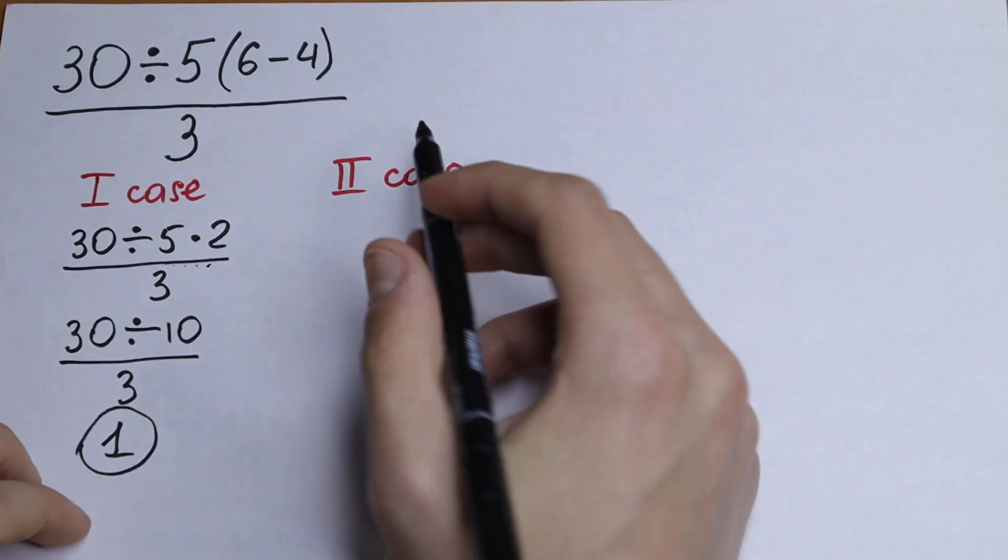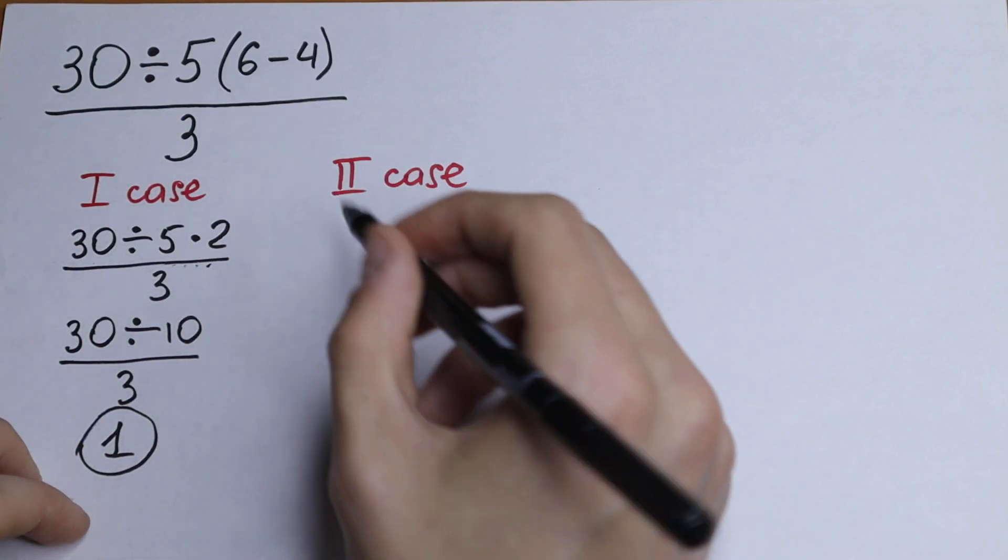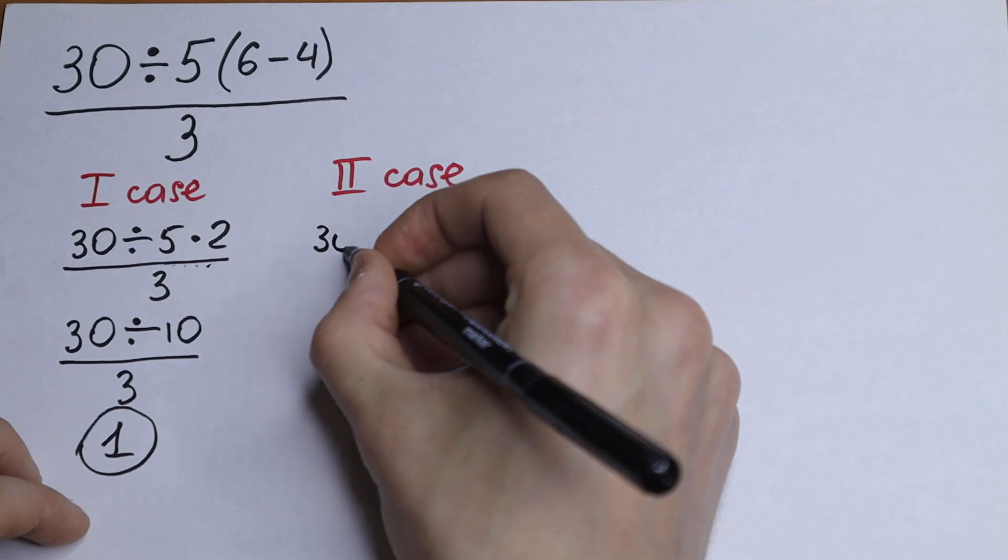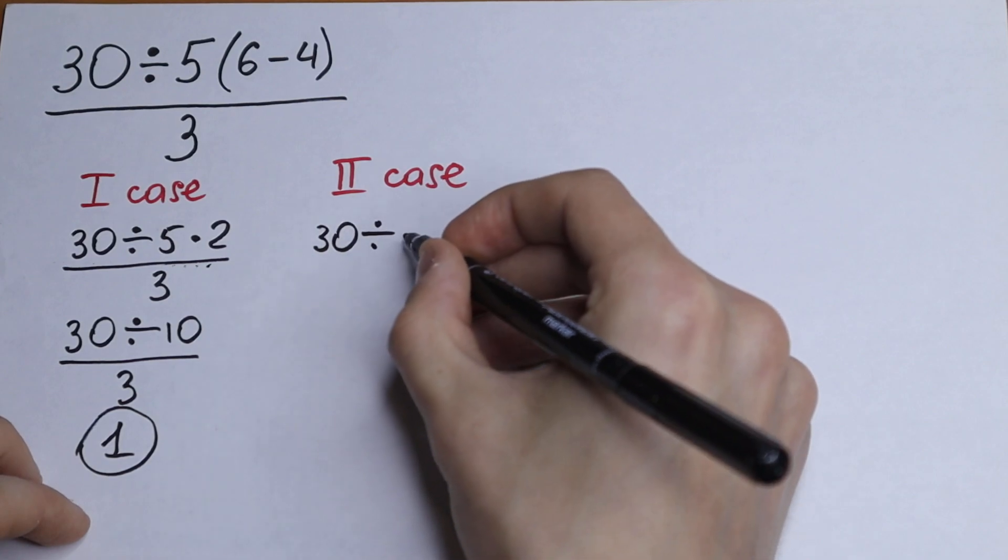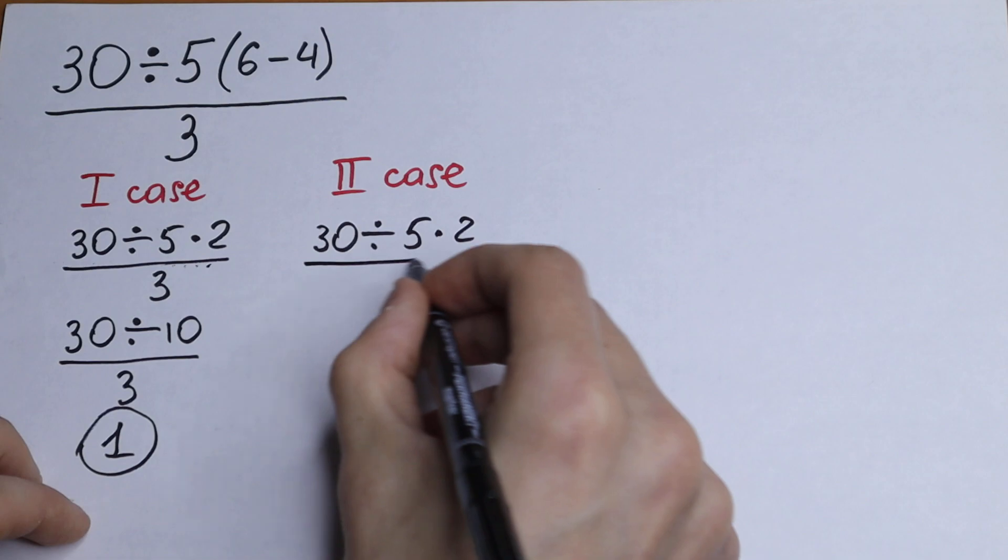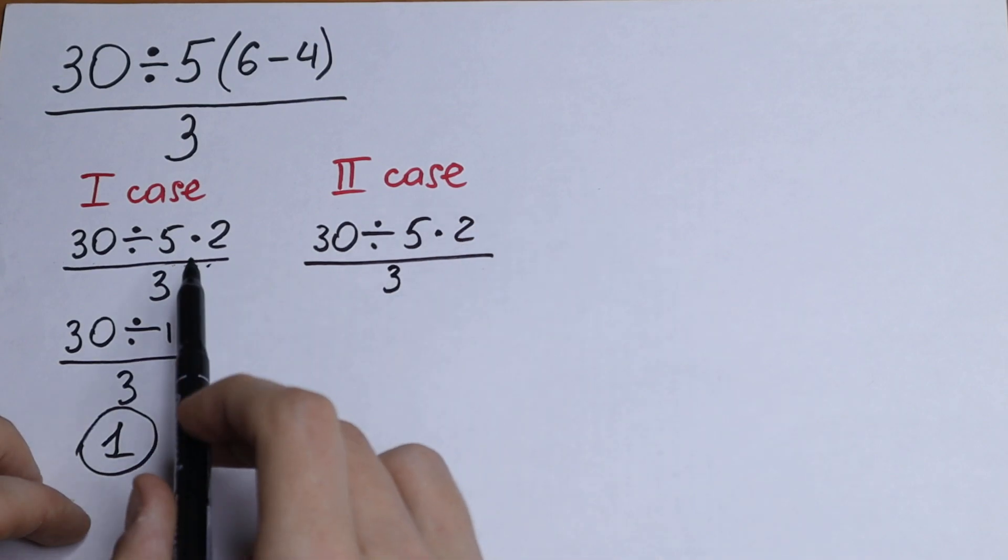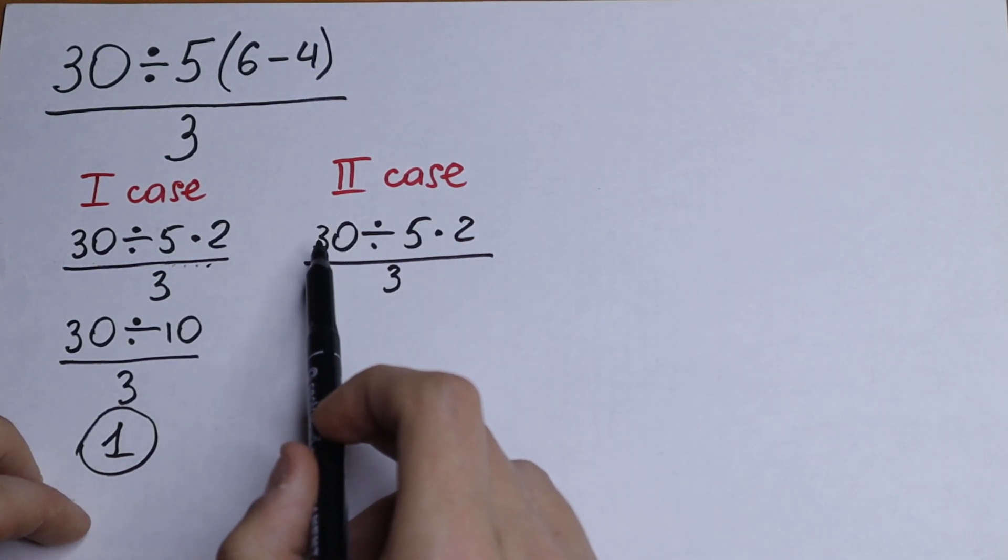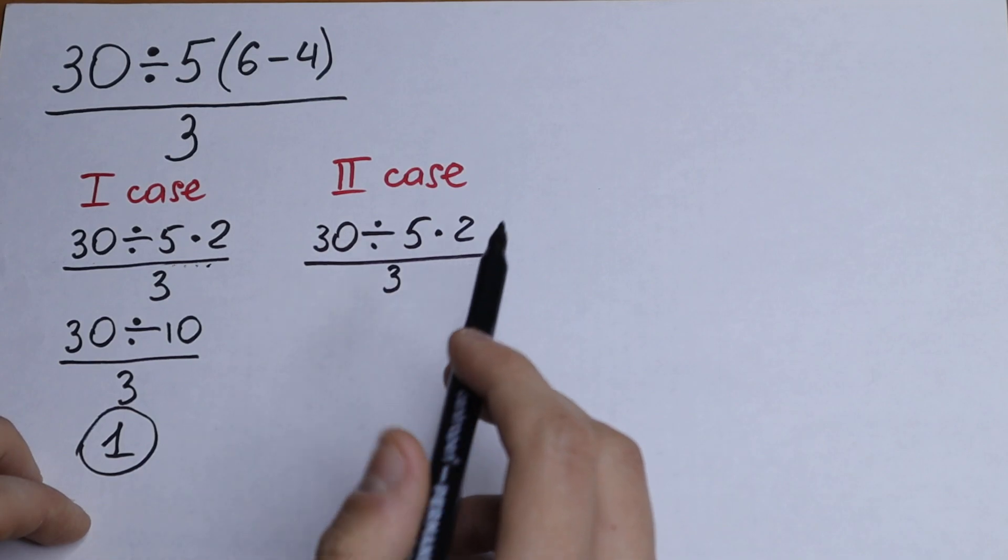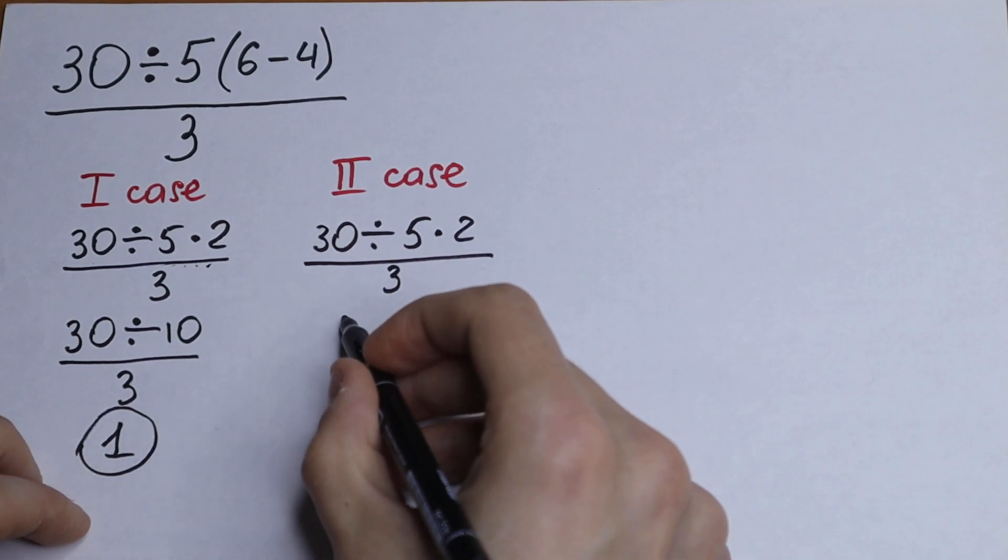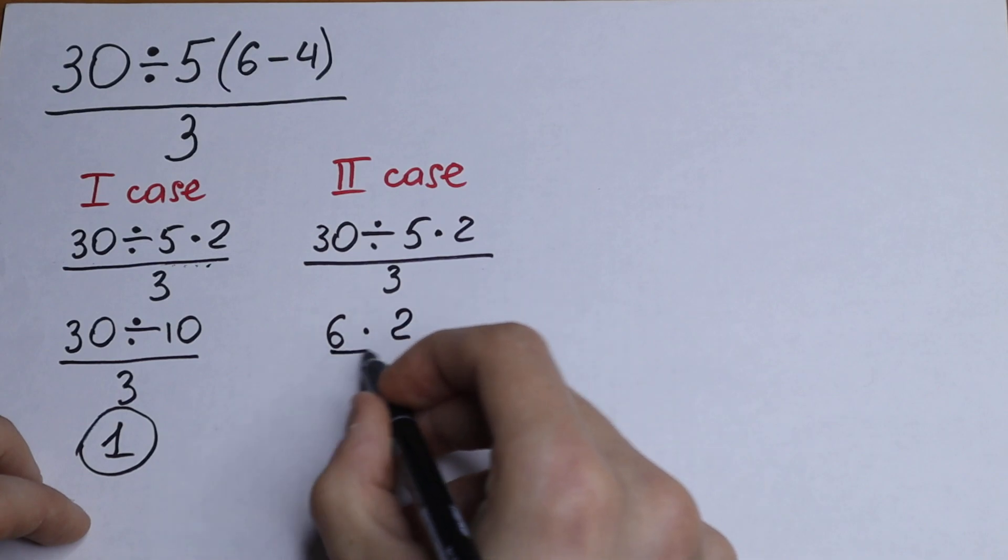30 divided by 5 and we have our parentheses. Of course, parentheses at first, we will have 30 divided by 5 times 2, the same as right here. And this has the same priority, so we can divide 30 divided by 5, it will be our 6. 6 times 2 over 3.